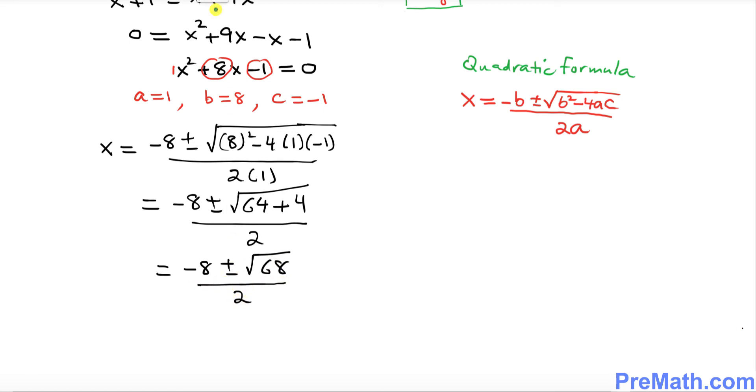Now I want you to focus on the radical of 68, which could be written as 4 times 17. Then you can split it up, break it down to √4 times √17. This part √4 is 2, so I can write 2√17.